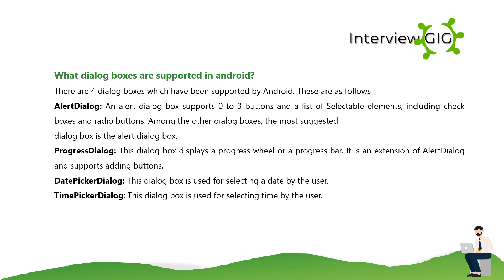What dialog boxes are supported in Android? There are four dialog boxes supported by Android: Alert Dialog — supports 0 to 3 buttons and a list of selectable elements including checkboxes and radio buttons; it is the most suggested dialog box. Progress Dialog — displays a progress wheel or progress bar, is an extension of AlertDialog, and supports adding buttons. Date Picker Dialog — used for selecting a date. Time Picker Dialog — used for selecting a time.